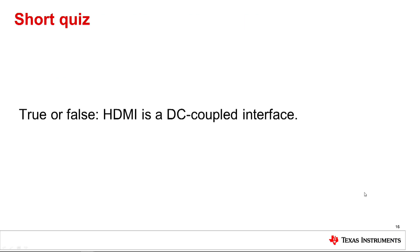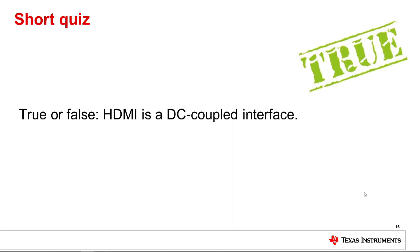To recap what we discussed, let's go over a short quiz. Number 1: True or false — HDMI is a DC coupled interface. True. HDMI is a DC coupled interface, while DP++ is AC coupled.